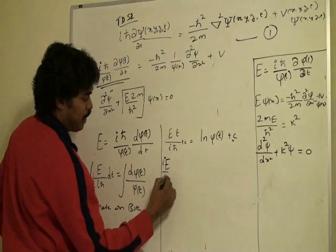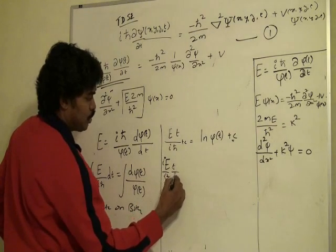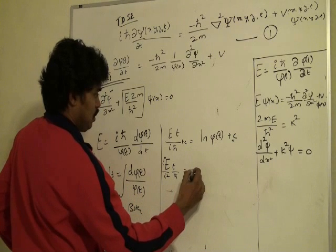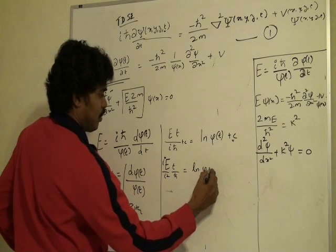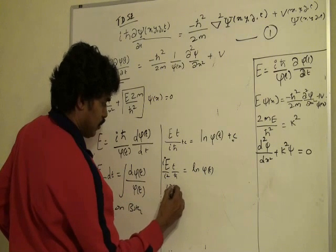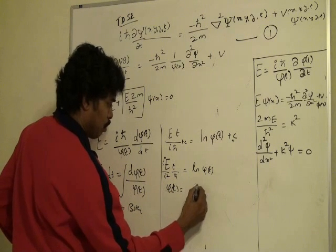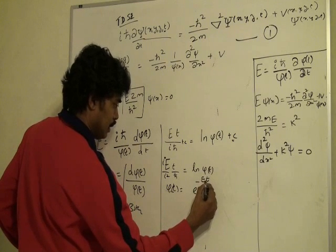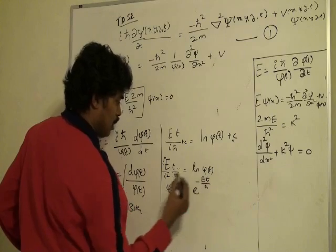sorry, i by i² so -iEt over h bar equal to ln φ(t), which means φ(t) is equal to e to the power minus iEt by h bar.